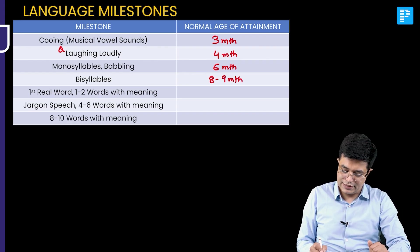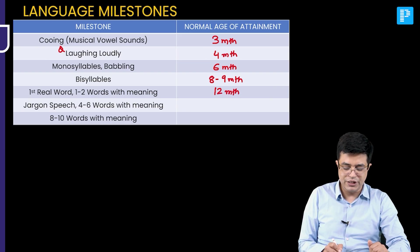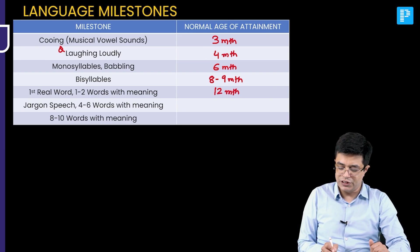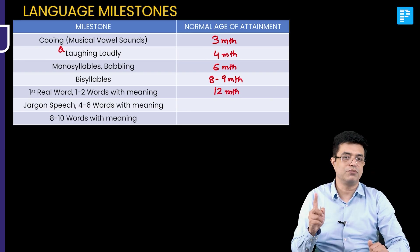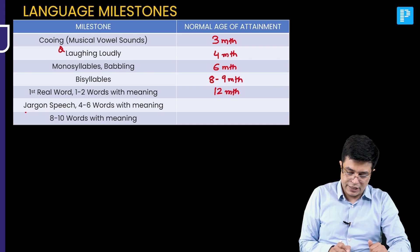The first real word a child is able to make starts from 12 months of age, that is 1 year of age, and 1 to 2 words with meaning are also spoken from 12 months of age.